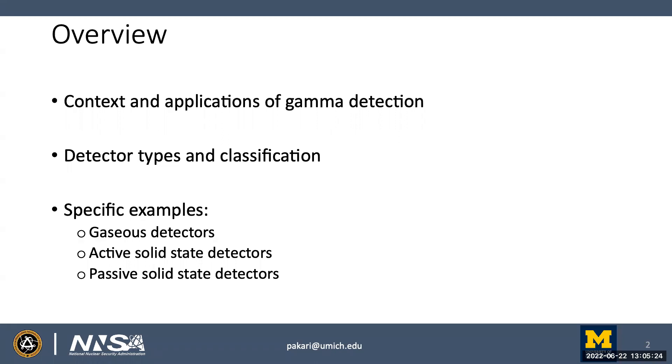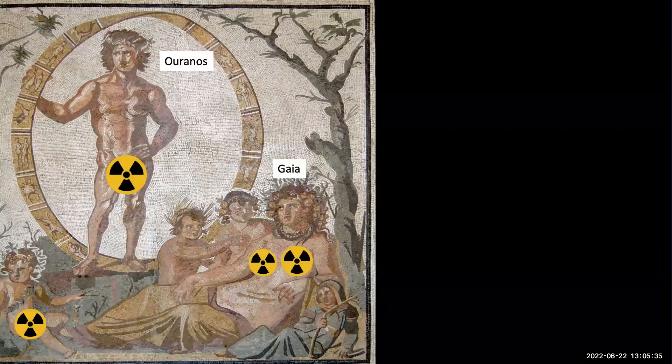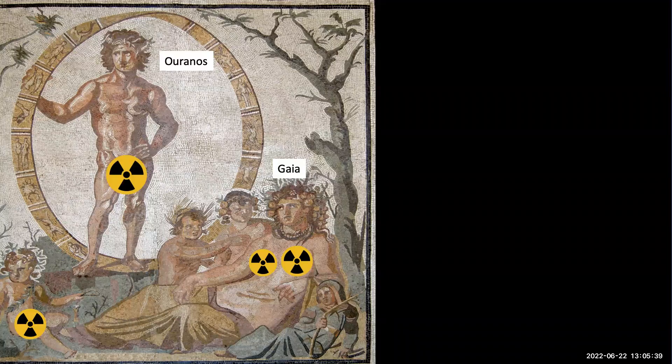Let's begin with some context. In the beginning, if we are to believe the Greek myths, there was nothing, and then out of nothing was born Gaia the earth and Uranus the sky. From there, basically all of the Olympian gods were born and all of Greek myths and history unraveled.